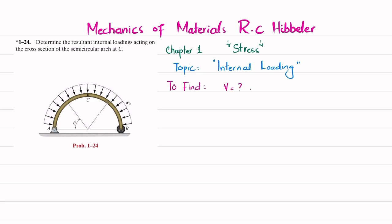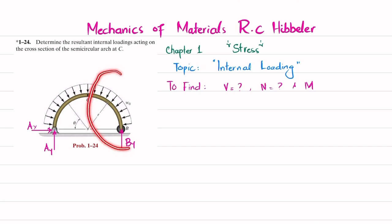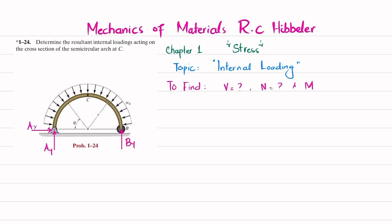Let's start with the solution. The first step is: if I remove the pin support at point A, there will be a reaction force in the y-direction, A_y, and a horizontal reaction force. Similarly, if we remove the roller support, there will be a vertical reaction force B_y. We are going to find B_y, then cut this arch beam and take that portion to find the internal loading at point C, which is V, M, and N.